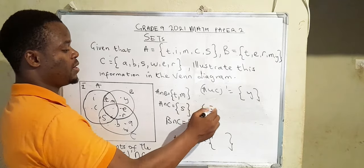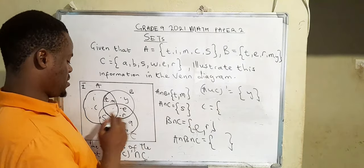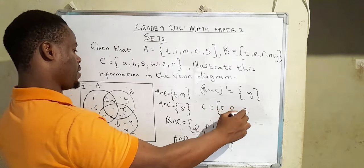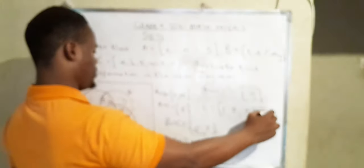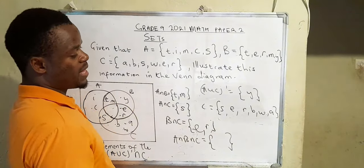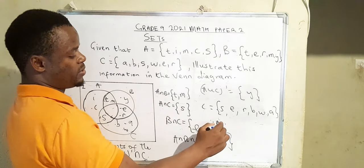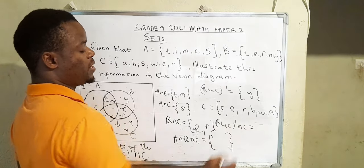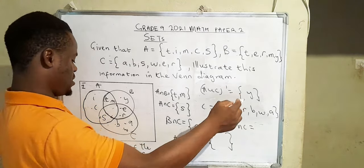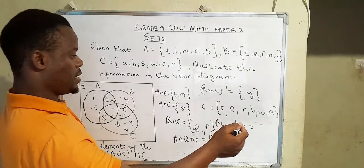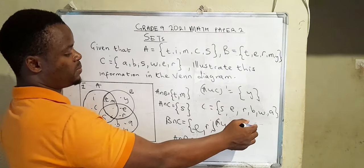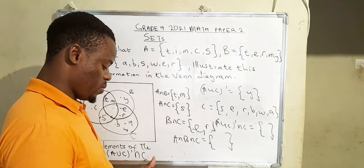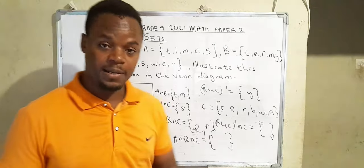Then they want us to find the intersection set of this set with C. So now C has the following elements: S, E, R, B, W, A. So what is (A∪C)' ∩ C? We simply come to check what is common in these two sets. So there's nothing common. So the answer is a null set.